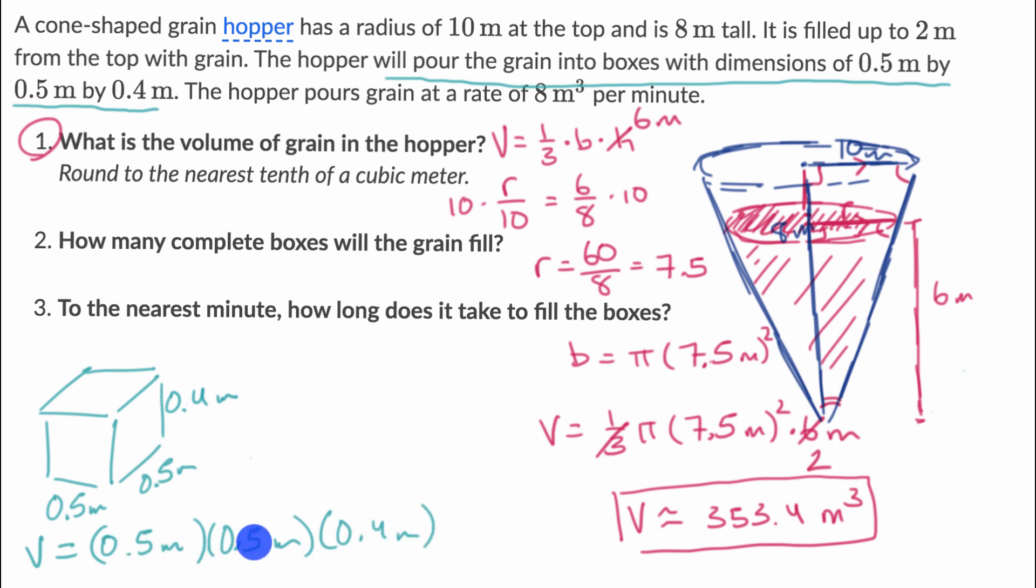And we should be able to do this in our head, because five times five is 25. 25 times four is equal to 100. But then we have to think we have one, two, three digits to the right of the decimal point. So one, two, three. So this is going to be a tenth, 0.100 cubic meters. So a tenth of a cubic meter.